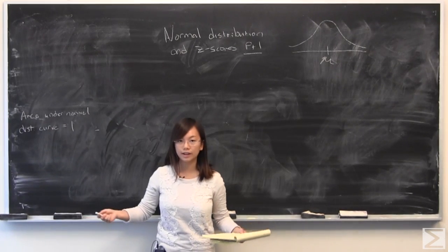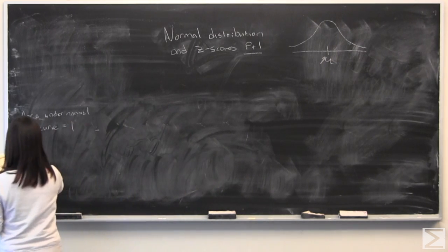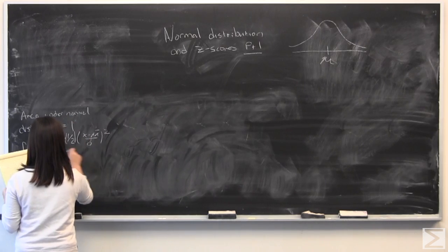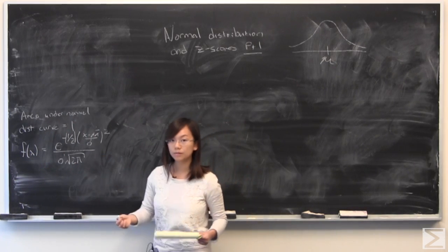Then I will follow that up by writing out the f of x is equal to what gives the normal distribution curve. And so this f of x gives the normal distribution curve.